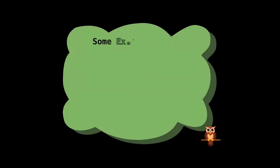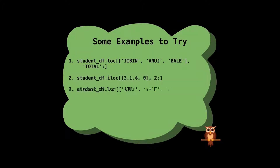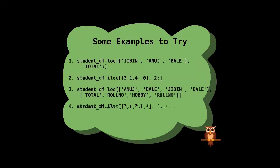The order of column and row selection doesn't matter here — rows jibbon, bail, and anudge are not in order. Also, you can select the same row and column multiple times without getting any errors, as you can observe in code 3 and 4 where row bail and column rolno are repeated.